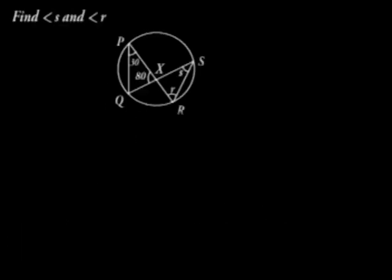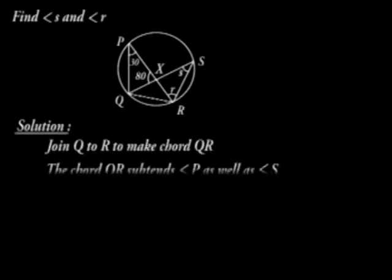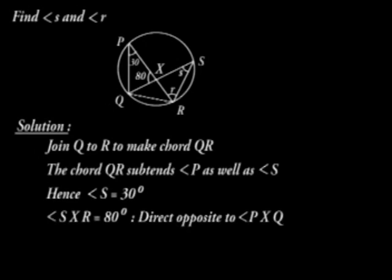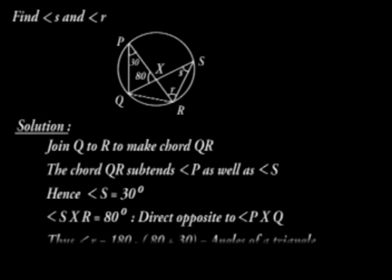For example, find angle S and R in the figure below. In our solution, join Q to R to make chord QR. The chord QR subtends angle P as well as angle S. Hence angle S is 30 degrees. Angle SXR is 80 degrees, being directly opposite to angle P. Thus angle R is equal to 180 minus 80 plus 30, which are the angles of a triangle, so R is 70 degrees.